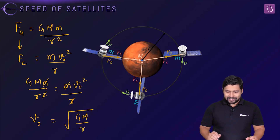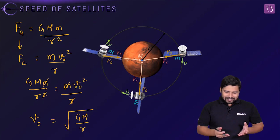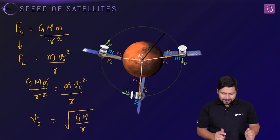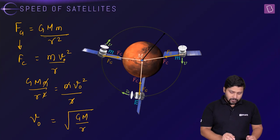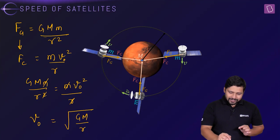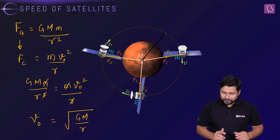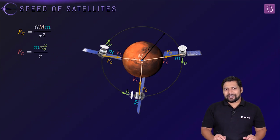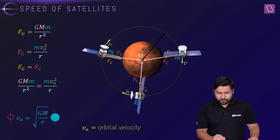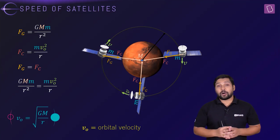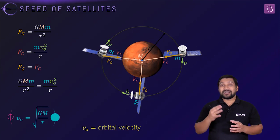This orbital velocity is constant for a particular orbit, since G, M, and r are all constant for a circular orbit — the distance from the center to the satellite is always r. Now, when talking about Earth, we have different types of orbits: the low Earth orbit, the mid Earth orbit, and the geostationary orbit.